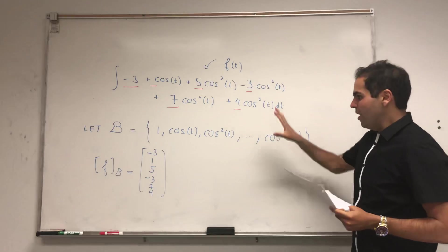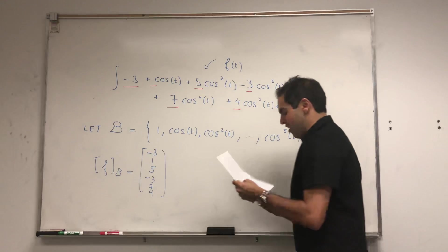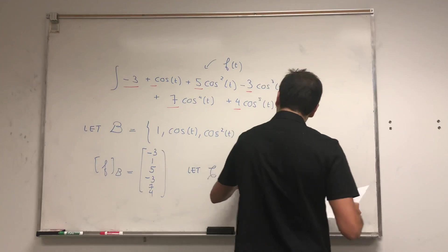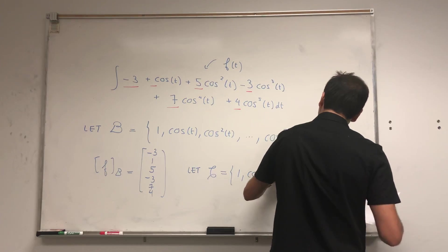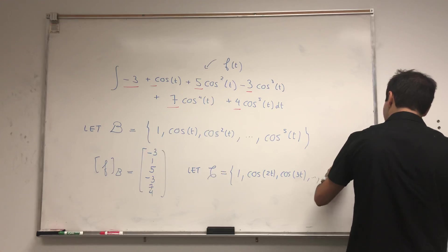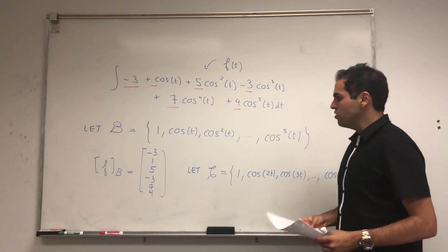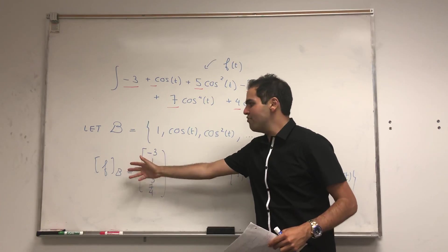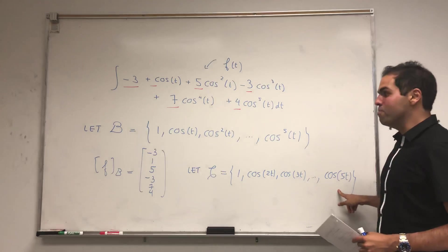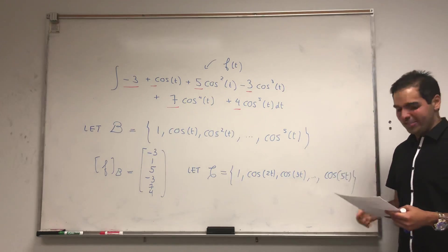What we want to do is express this function in terms of a nicer basis. Let C be the basis: 1, cosine of 2t, cosine of 3t, and so on up to cosine of 5t. Why is that useful? Not only will we be able to express f easily in terms of C, but the crux is that those functions are much easier to integrate than cosine t, cosine squared t, and so on up to cosine to the fifth t.